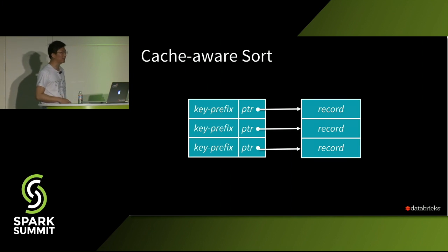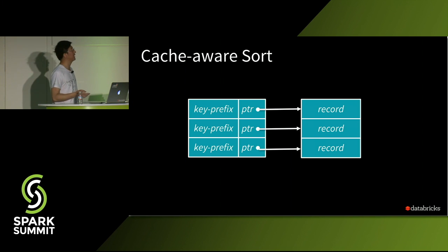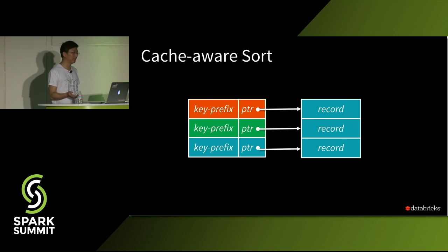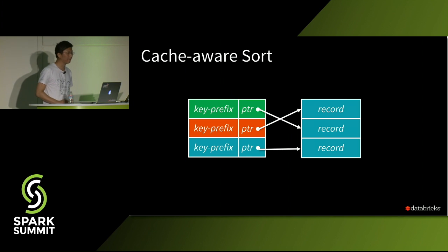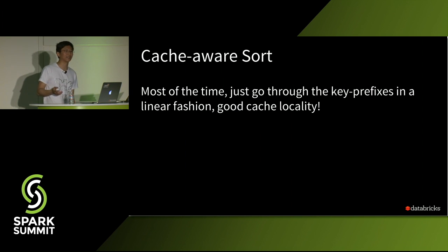Spark improves this with a cache-aware sort. The idea is that most of the time, when we compare two records, we can get the result using only the first eight bytes — a fixed-length key prefix. In Spark, we store this key prefix alongside the pointer. When sorting, we read the pointer array, get two records, and compare the key prefixes. Most comparisons can be resolved with just the key prefix — for example, if the second record is smaller, we switch. By this algorithm, we mostly traverse the key prefix array in a linear fashion, giving the CPU cache excellent locality since it can easily predict what to fetch next.